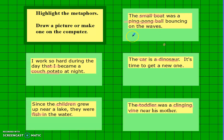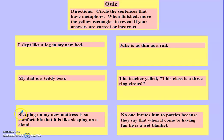You can imagine the small boat bouncing on the waves kind of like a big ping-pong ball. And I'm sure you know what a couch potato is — someone who just sits on the couch and doesn't move. The children are compared to fish because they must be very good at swimming.